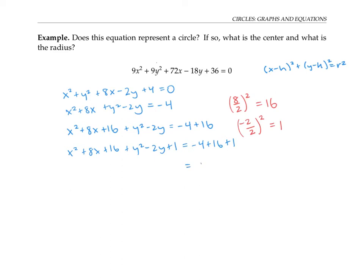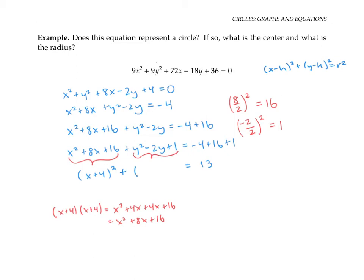Now on the right side I have the number 13. On the left side, I can wrap up x squared plus eight x plus 16 into the expression x plus four squared. To convince you that's correct, let me multiply out x plus four times x plus four. That gives me x squared plus eight x plus 16, which is exactly what I have above. Similarly, I can wrap up the expression y squared minus two y plus one into y minus one squared. Multiplying out y minus one squared gives me y squared minus two y plus one, exactly what I started with above.